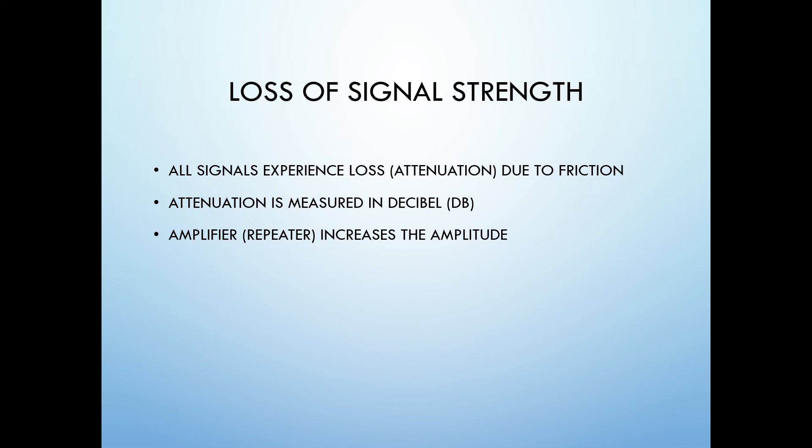When a signal passes through a medium, it may experience a loss of power due to friction. The loss of power is called attenuation and is measured in decibels. To make up for attenuation, a signal can be amplified.